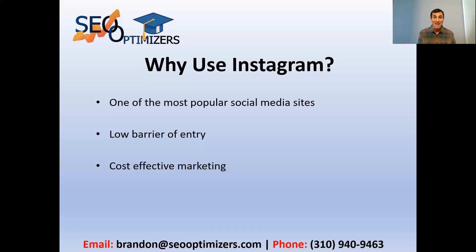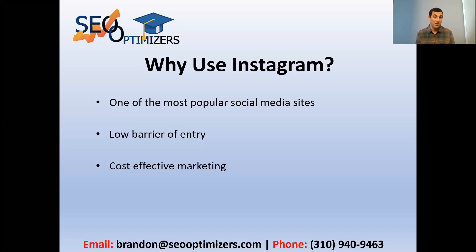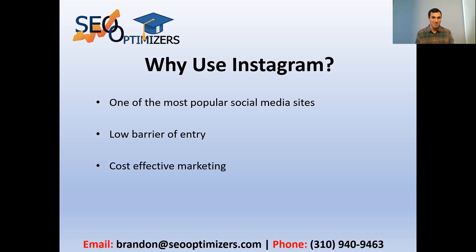There's a reason ads are cheaper on Instagram versus Google — it's because there's not much intent. When you're showing people ads on Instagram or social media in general, you're throwing stuff at them hoping they're interested. You set target demographics — age, income level, interests — but that doesn't mean they're actually looking for your product or service. You're just hoping they are because they match those demographics.